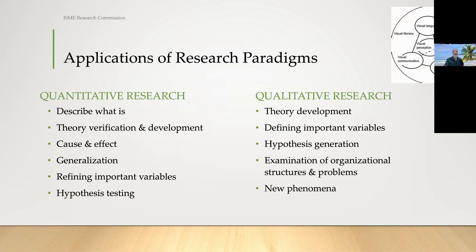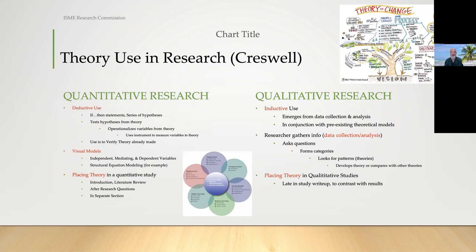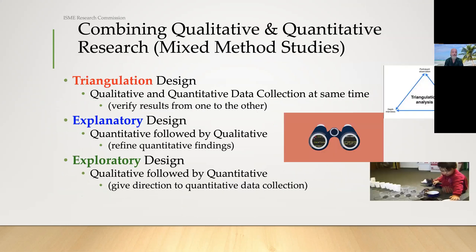Qualitative research and quantitative research do different things. Both use theory — some will generate theory, some will verify theory. Quantitative research looks at cause and effect; qualitative research can many times be used to create new hypotheses and is really great for new phenomena. Qualitative research is done in an inductive manner, bottom up, whereas quantitative research uses theory to be verified and starts with a deductive approach. We can also do combinations through triangulation design, where we use one to verify the other's results, or use explanatory and exploratory designs — one refines findings, the other gives direction to the research.